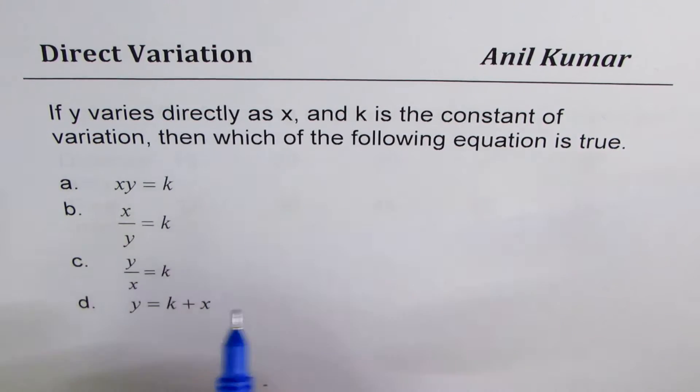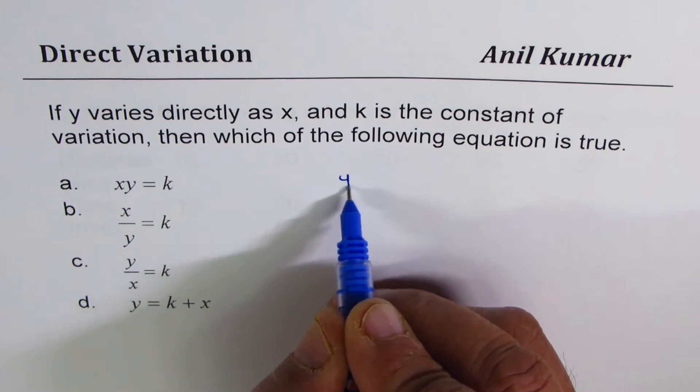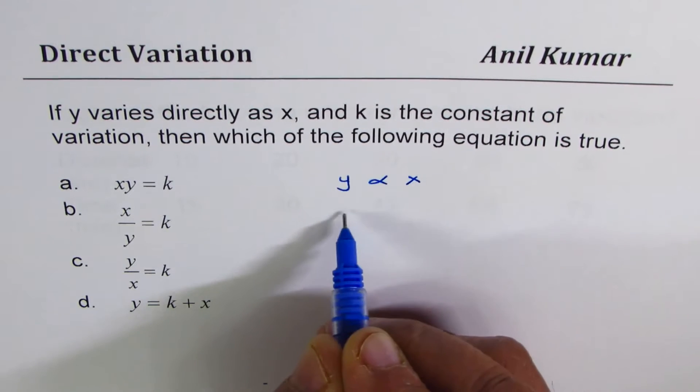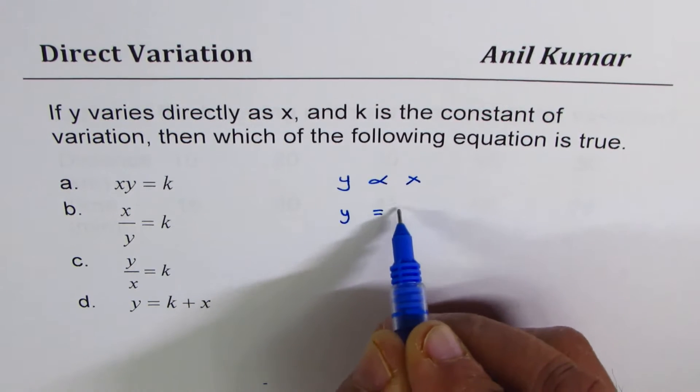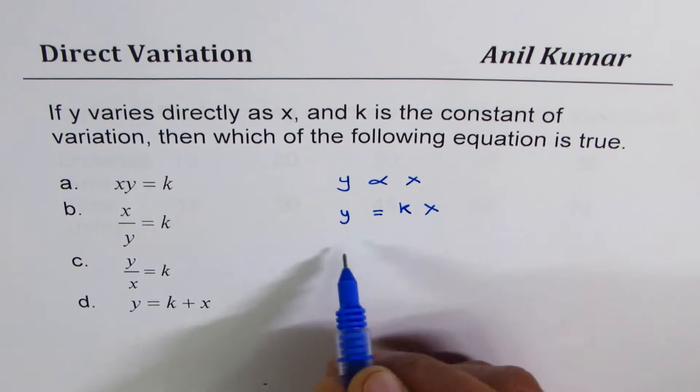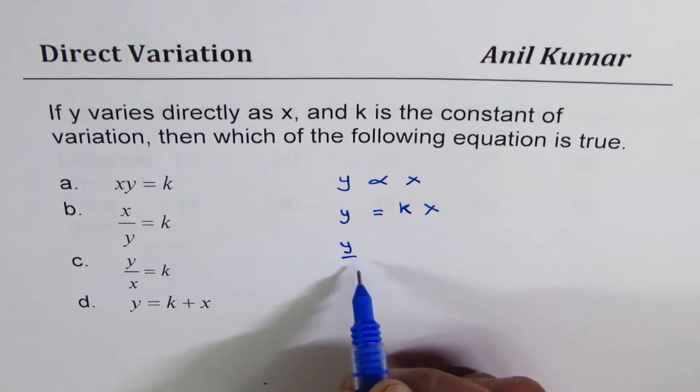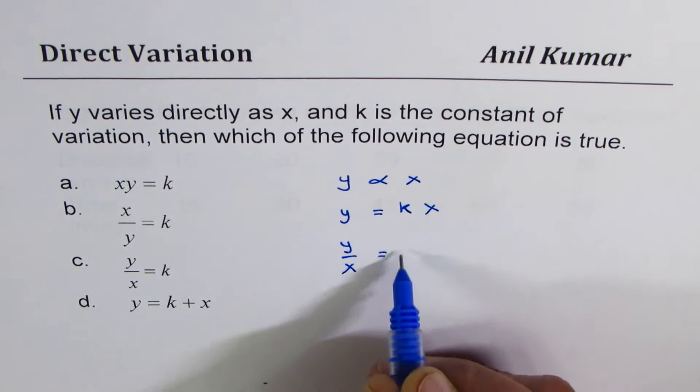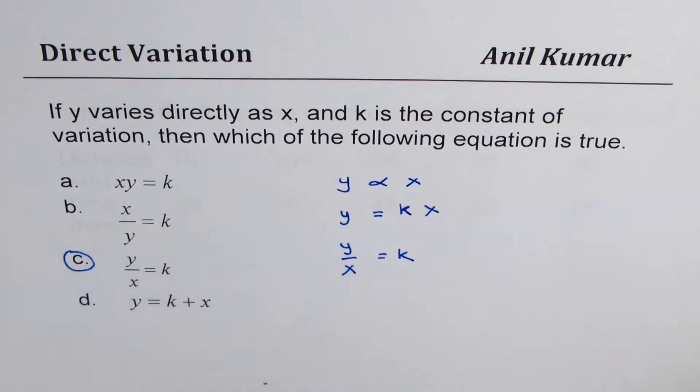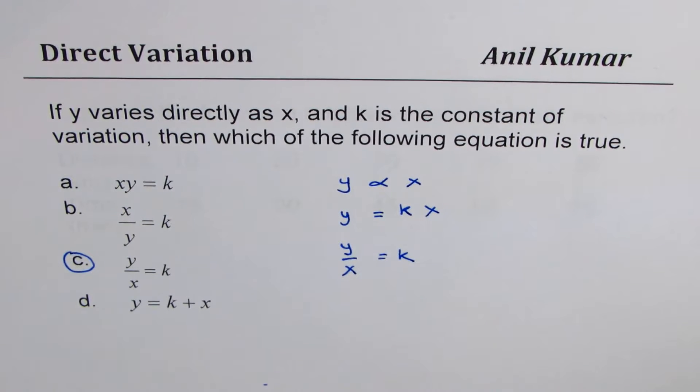To solve this, we'll go to the definition of direct variation. We know direct variation means y is proportional to x, or y is equal to a constant of proportionality, k times x. So you can rearrange and write k as y over x. So option c is the correct option. Let's move on.